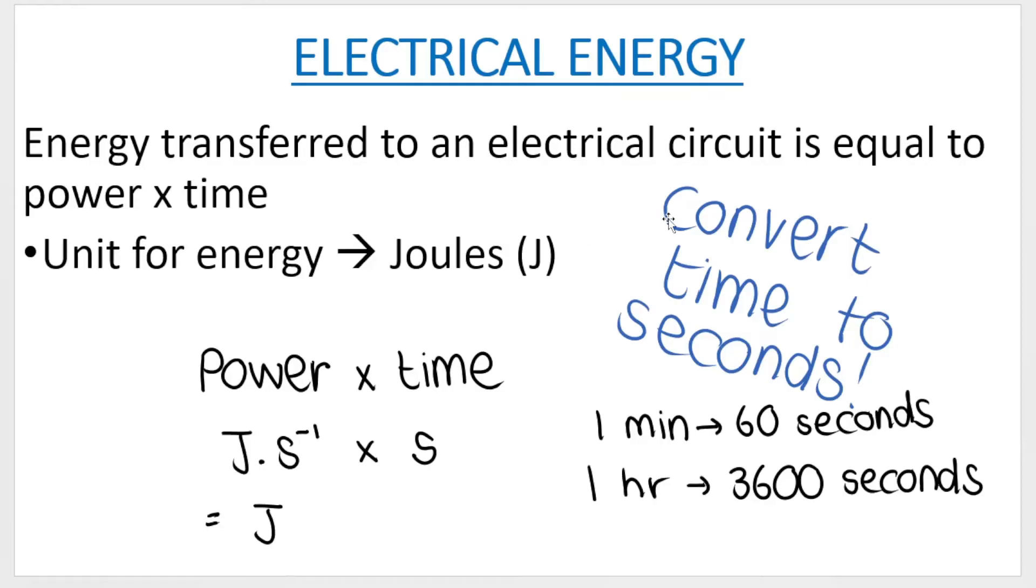The next thing that you need to know is that the energy transferred to an electrical circuit is equal to the power multiplied by the time. So E is equal to power times time. Power is measured in watts, but another unit for watts is joules per second. And time is measured in seconds. If you take a look at these units and cancel, do some math, you will get joules. It's very very important to take note that time has to be in seconds in order for this formula to work.